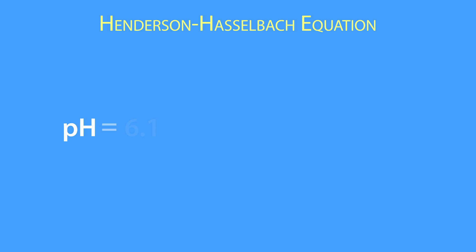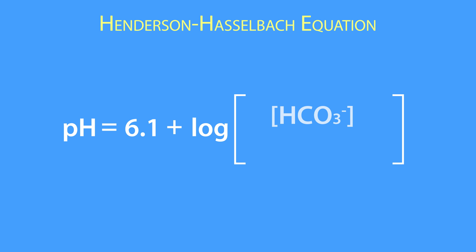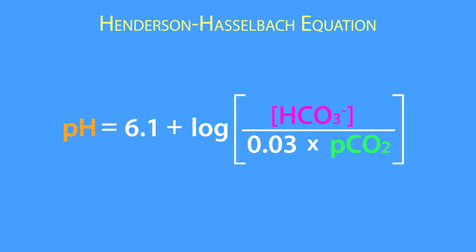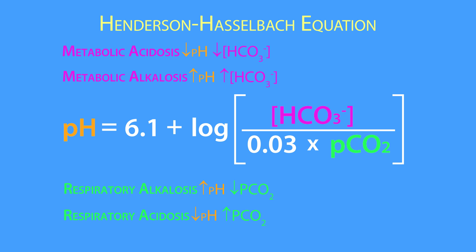In the previous lesson, we learned how to use the Henderson-Hasselbalch equation to estimate the plasma pH given the plasma bicarbonate and partial pressure of the arterial carbon dioxide. We also learned how plasma bicarbonate concentration and PCO2 relate to simple acid-base disorders.